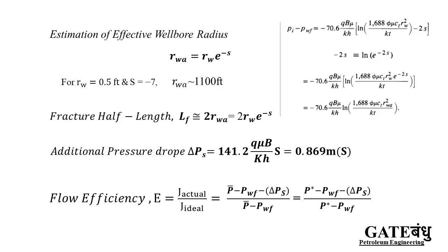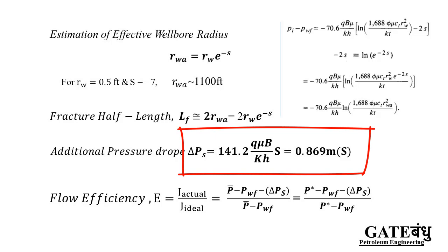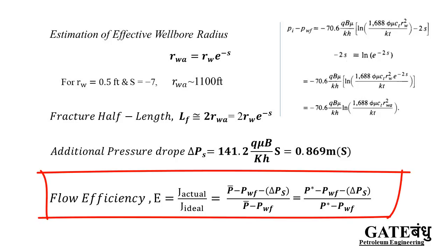When skin is known, we can estimate the pressure drop due to hindrance or stimulation — ΔP_skin. This equation can also be written in terms of the slope of the Horner plot. Knowing the slope and the calculated skin value, we can calculate the pressure drop due to skin. From this, we can also estimate the flow efficiency of the well.